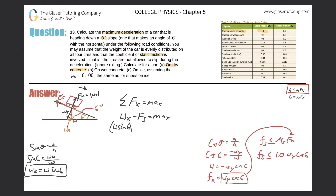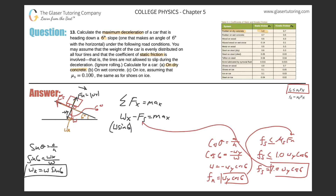Since they're asking for the maximum value, I'm going to convert the less-than-or-equal-to sign into just an equal sign. So now I can plug in: minus 1.0 times w cosine of six. That equals ma sub x.